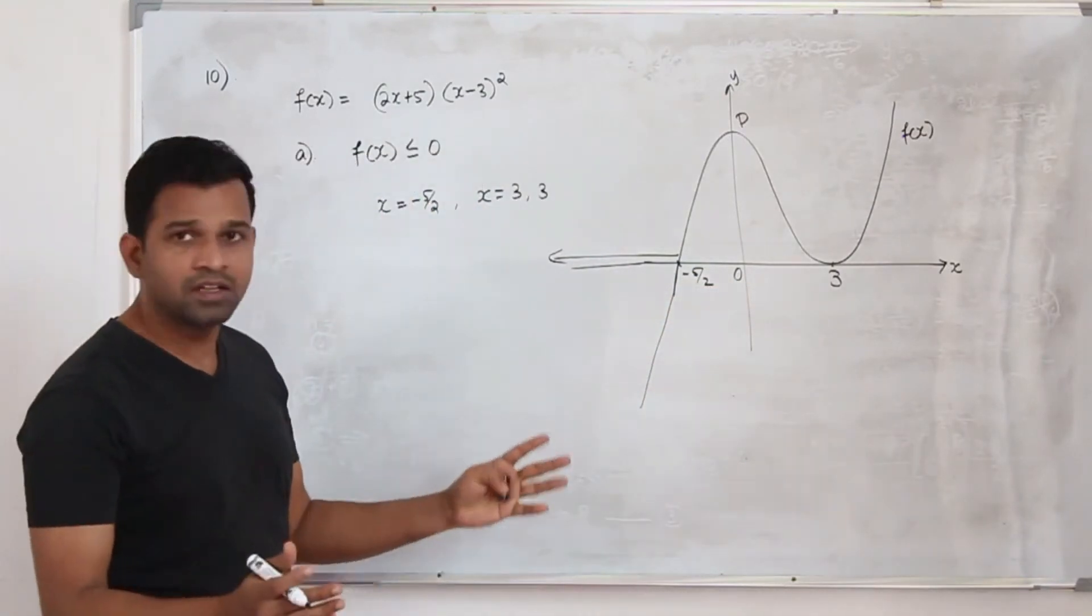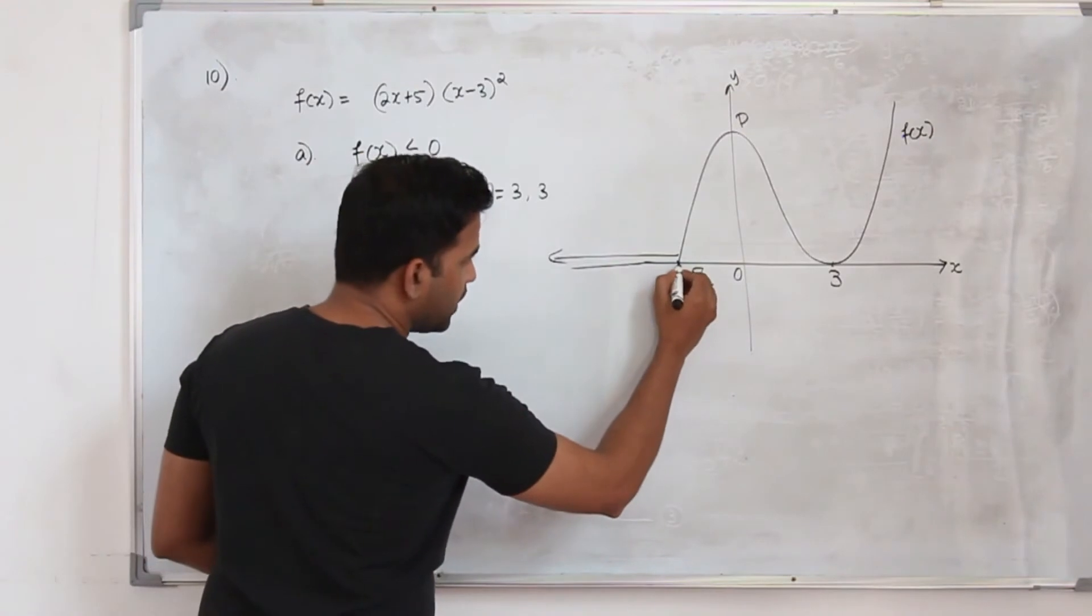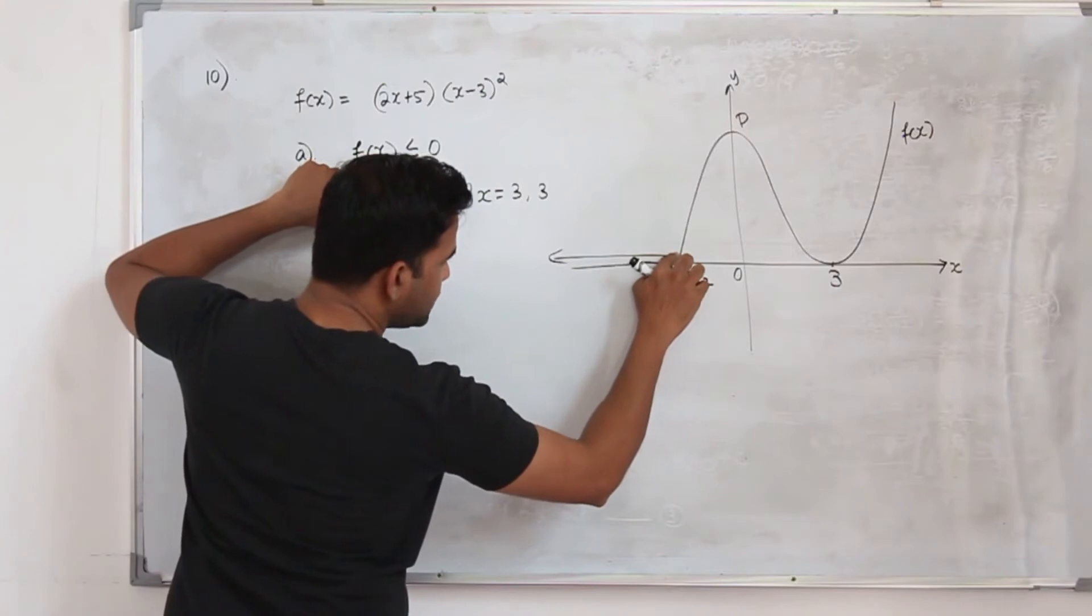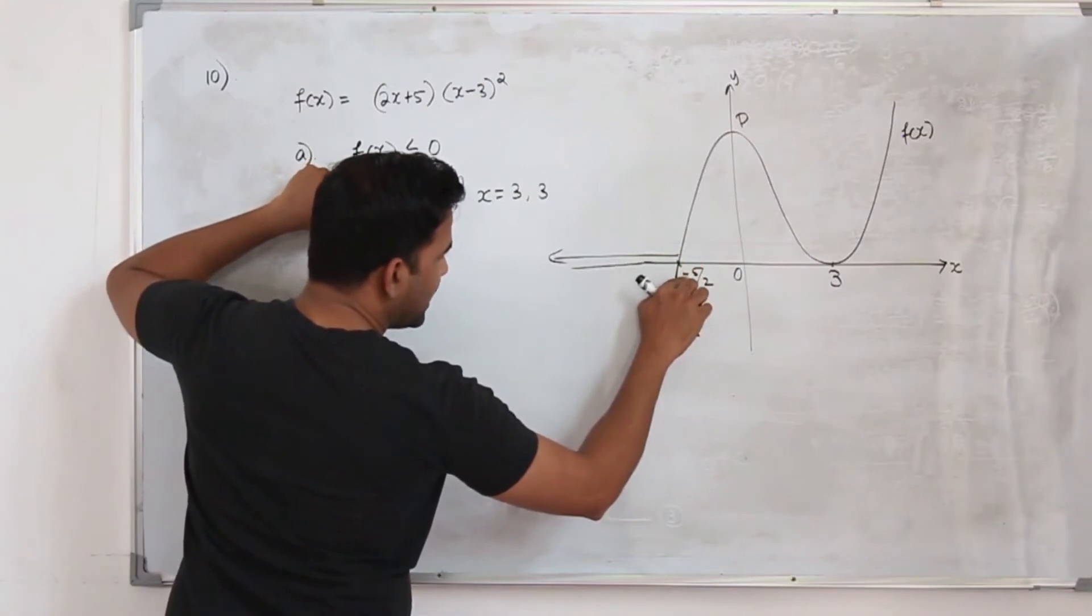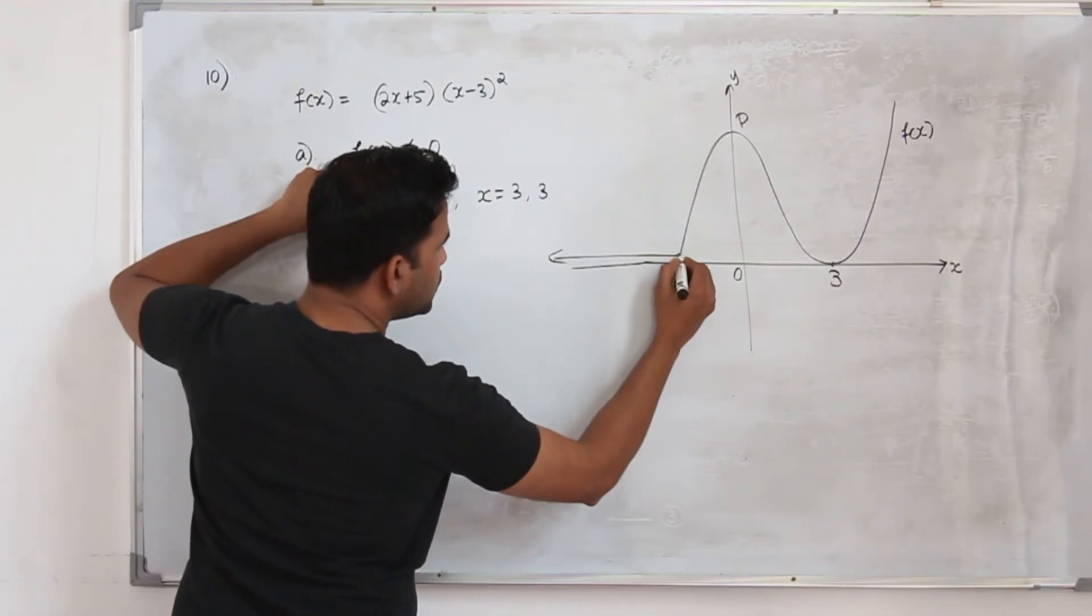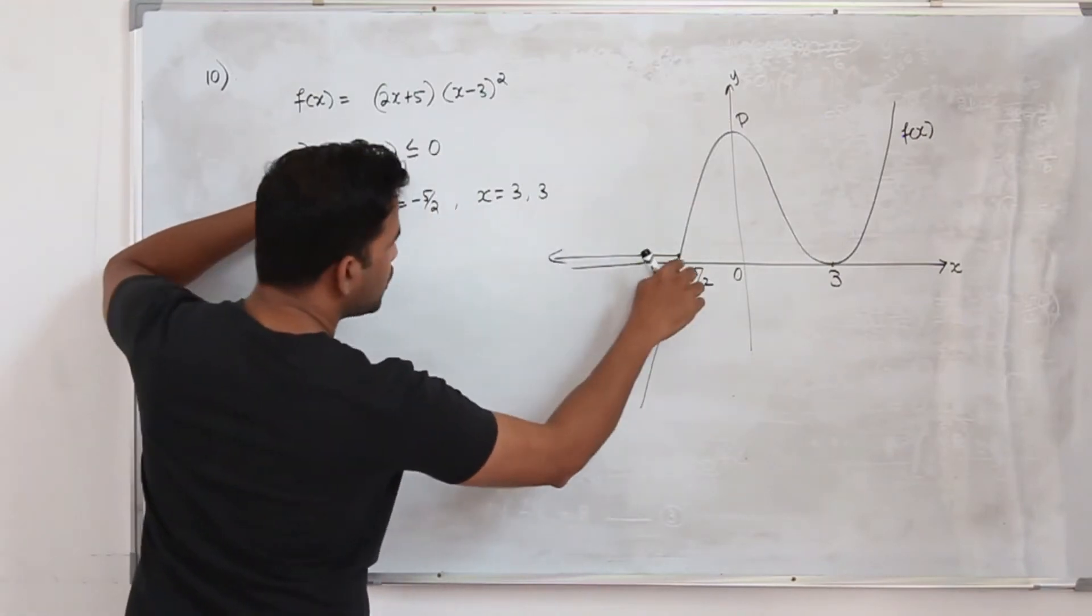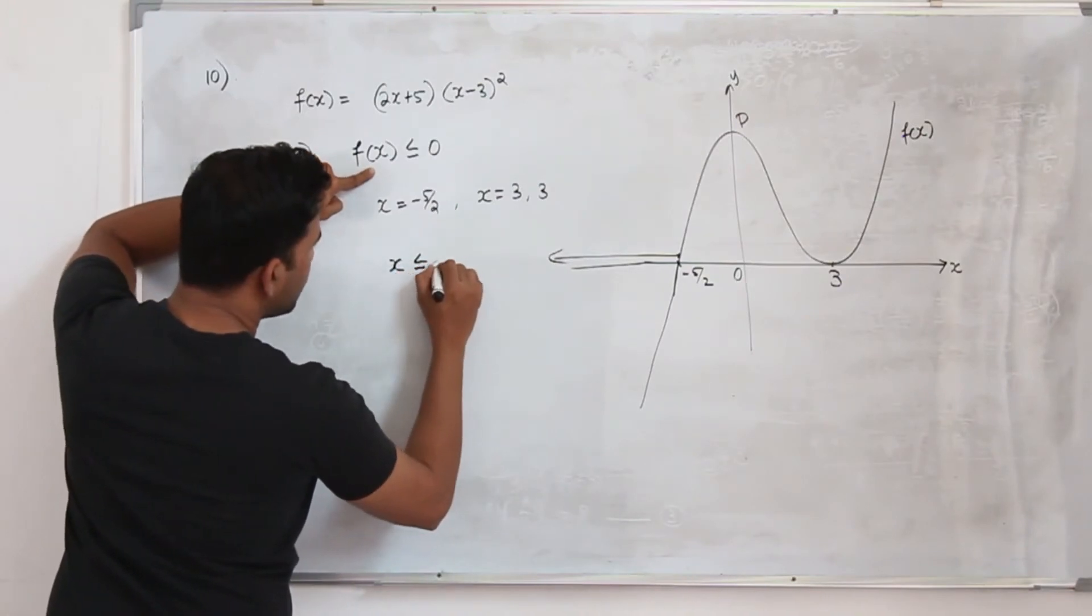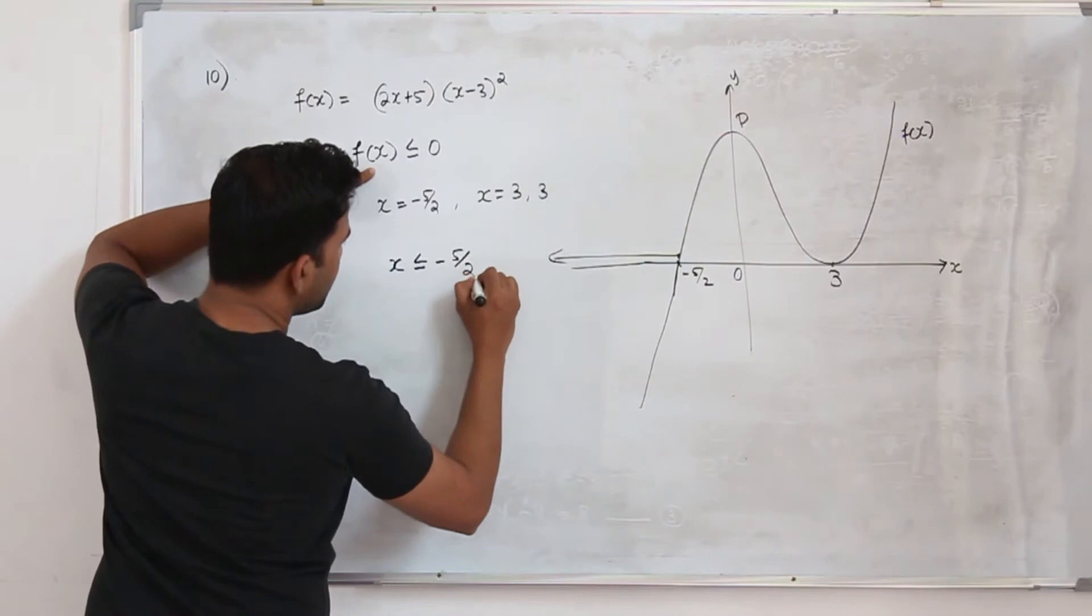So that's it. We got the solution. Now the function is less than 0 when x takes the value anything lesser than minus 5 upon 2. This 5 upon 2 also included because at the particular point the function is 0. So your x value will be less than or equal to minus 5 upon 2.